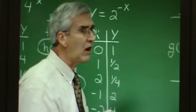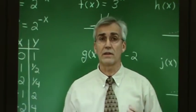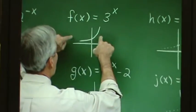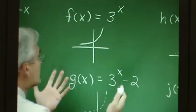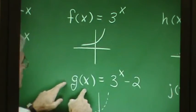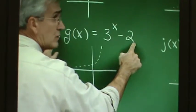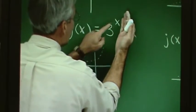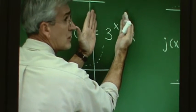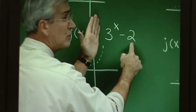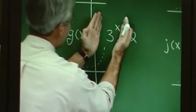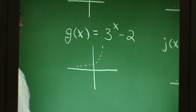All of our transformation ideas apply to exponential functions. If f(x) equals 3 to the x power, we can imagine transformations like g(x) equals 3^x minus 2. Since 3^x represents vertical distances and we subtract 2 from them, this graph drops 2 units on the coordinate plane. This is simply f(x) minus 2.